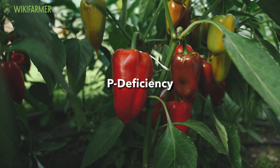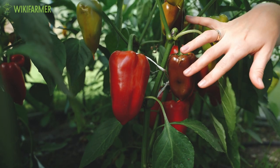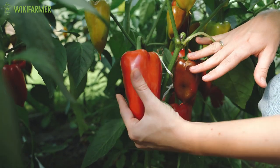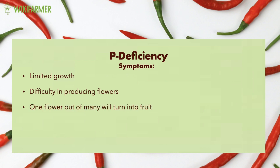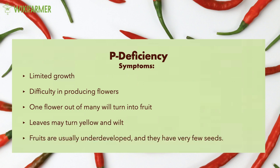Phosphorus Deficiency. If phosphorus levels are low, we observe limited growth. The plant has difficulty in producing flowers and when it does, only one out of many turns into fruit. Leaves may turn yellow and wilt, while the fruits are usually underdeveloped and have very few seeds.